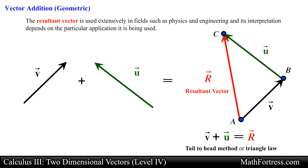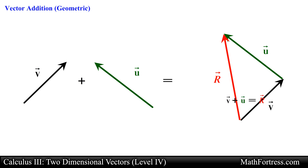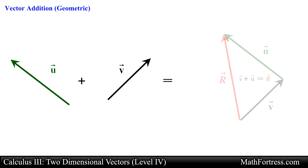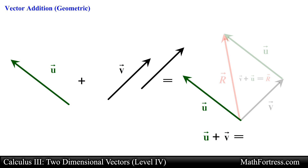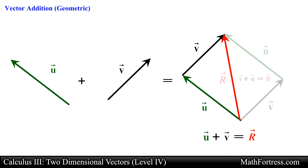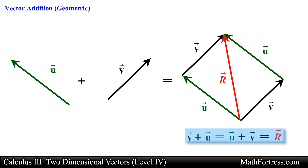This is the general procedure to add vectors geometrically. An alternative method is reversing the order in which you add both vectors. For example, say we wanted to add vector U plus vector V as opposed to vector V plus vector U. We take vector V and move it so that its tail coincides with the tip of vector U, and define the sum vector U plus vector V as the vector that starts from the initial point of vector U and terminates at the tip of vector V. Notice that we obtain the same resultant vector — in other words, vector V plus vector U equals vector U plus vector V.